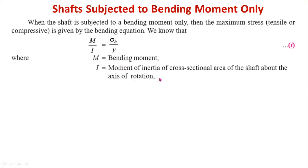The simple bending equation is M/I = σ/Y = E/R. From this equation, we determine the bending stress using M/I = σ_B/Y. Here, capital M is the maximum bending moment, and capital I is the moment of inertia of the cross-sectional area of the shaft about the axis of rotation.